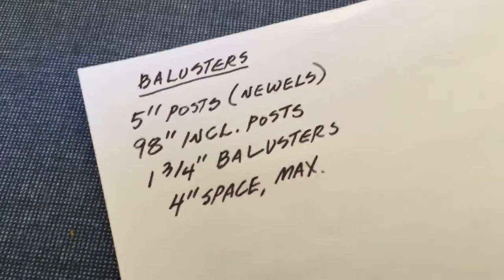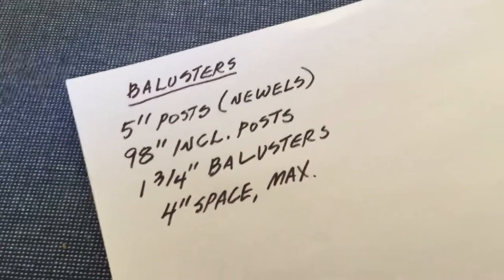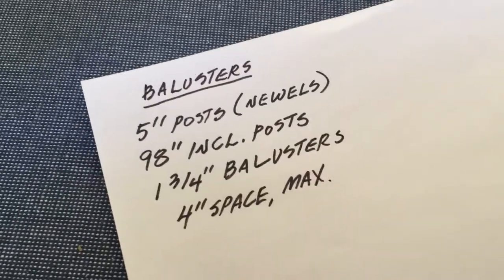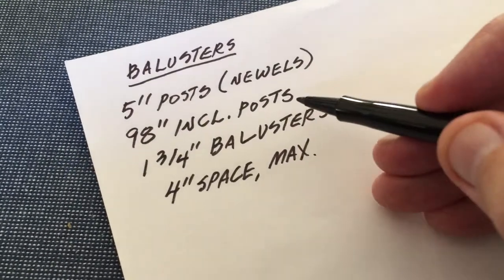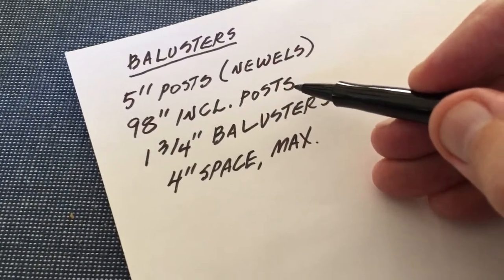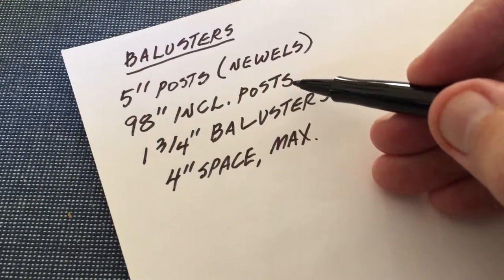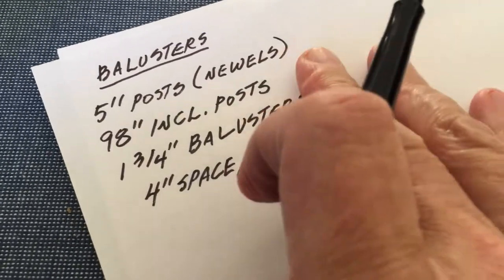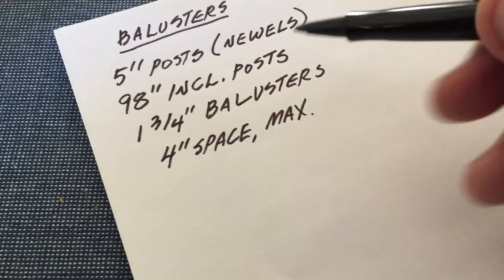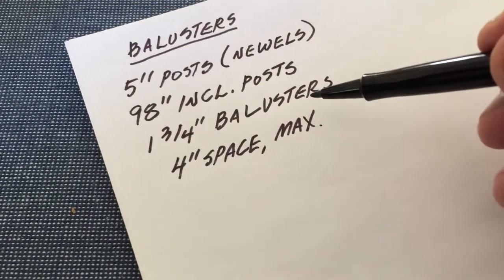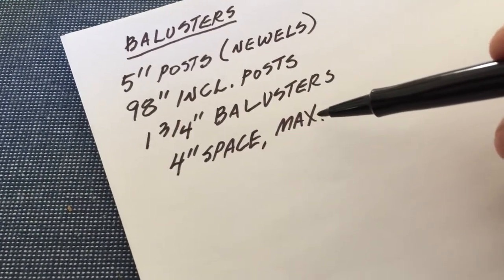We're going to do a baluster problem. The problem is we've got a 98 inch distance including the two posts at each end which are five inches apiece, and we're going to be installing one and three-quarter inch balusters with a four inch space.